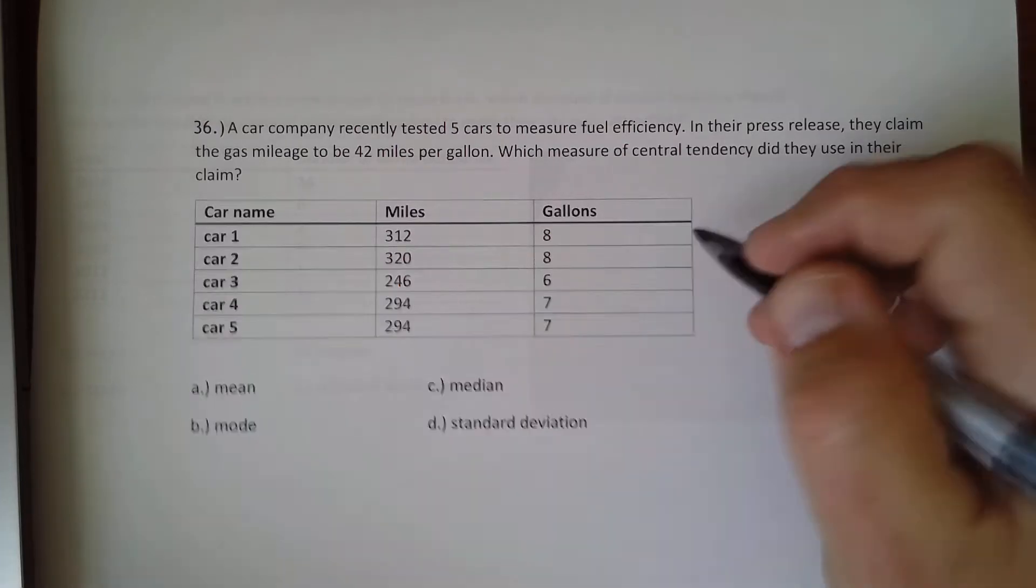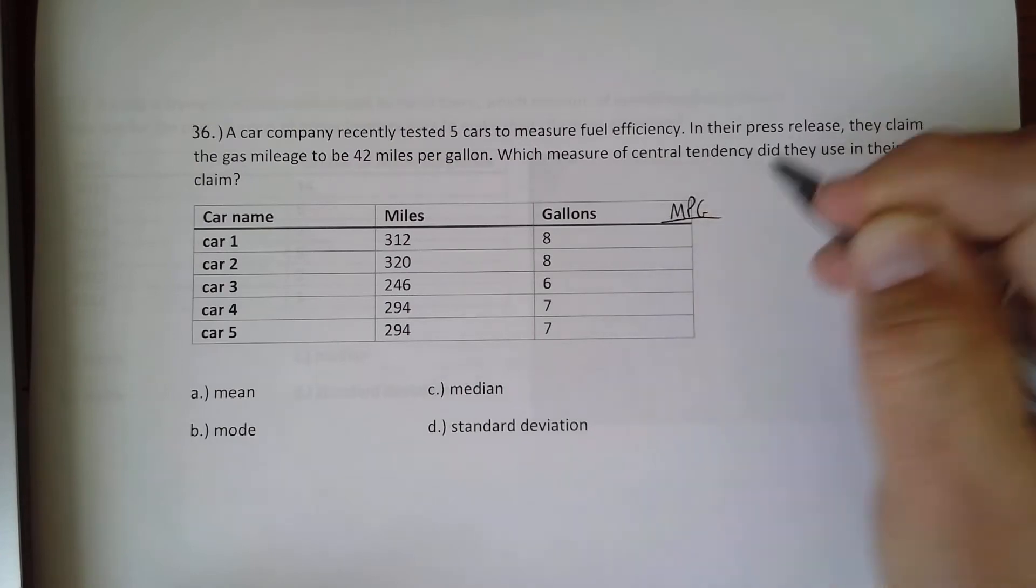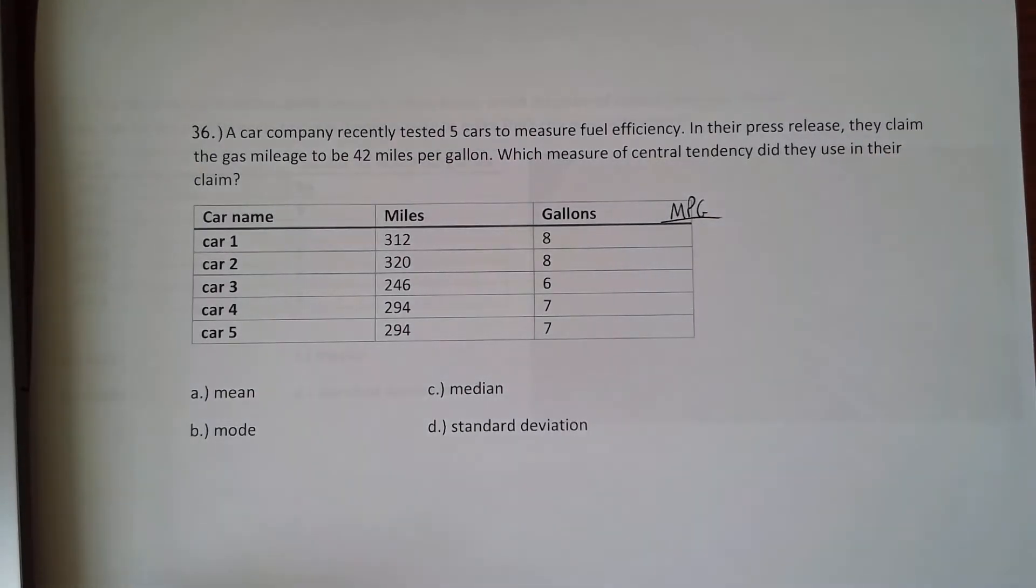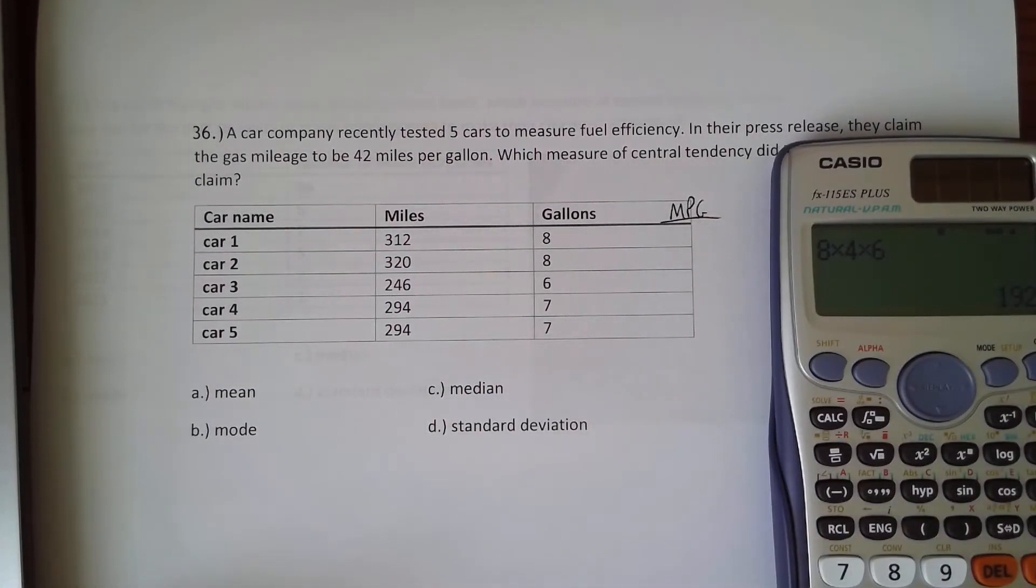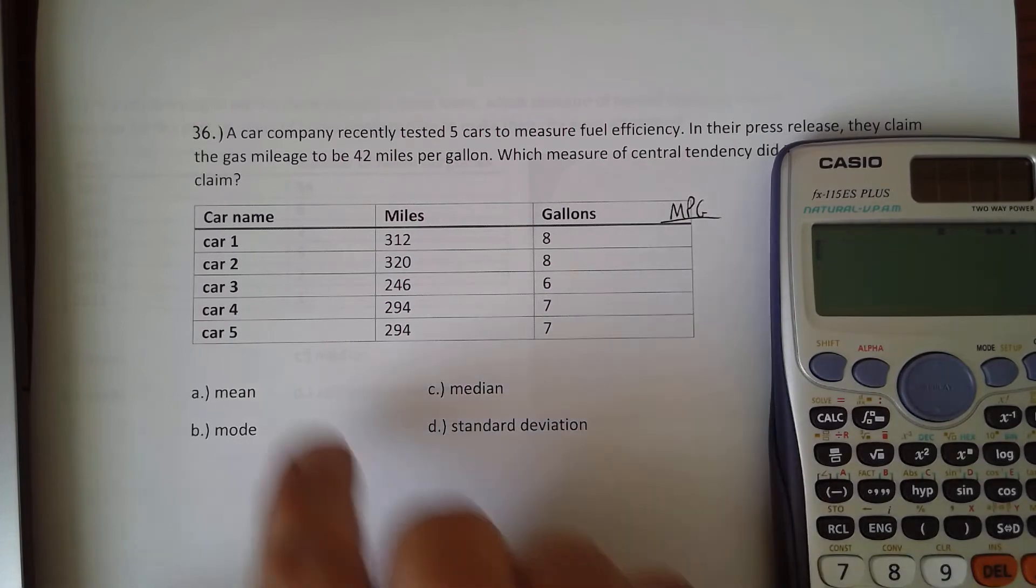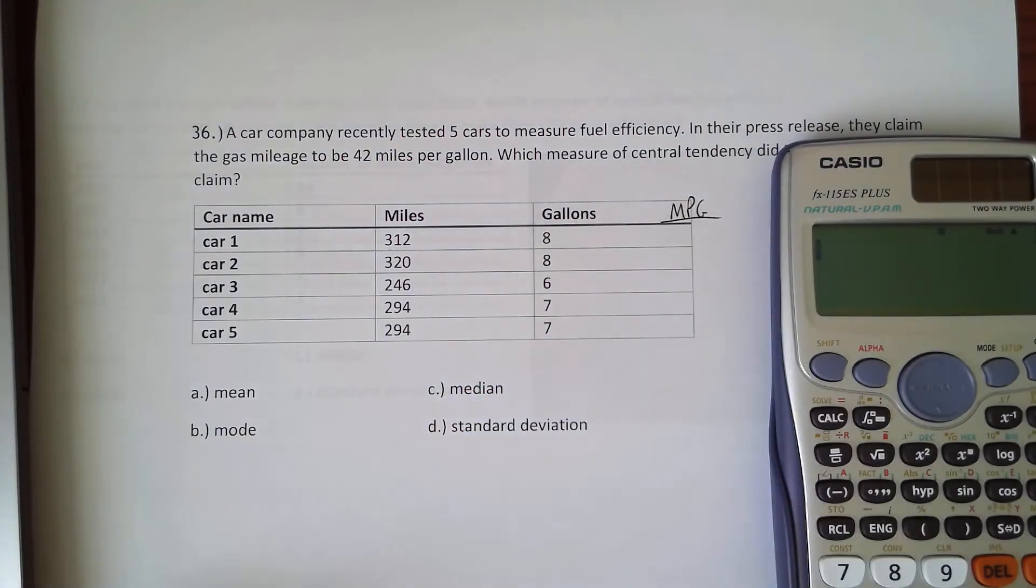The first thing we need to do is to figure out the miles per gallon for each of these cars. So you're going to do that by taking the miles driven and dividing it by the gallons.